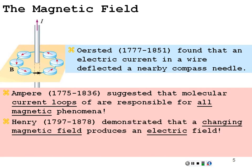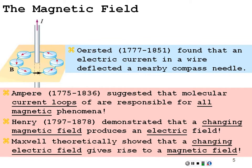Joseph Henry demonstrated that a changing magnetic field produces an electric field, and James Clerk Maxwell theoretically showed that a changing electric field gives rise to a magnetic field. This reaffirms that changing a magnetic field gives an electric field — which is the source of our power generation techniques — and changing an electric field gives a magnetic field. They are intertwined.